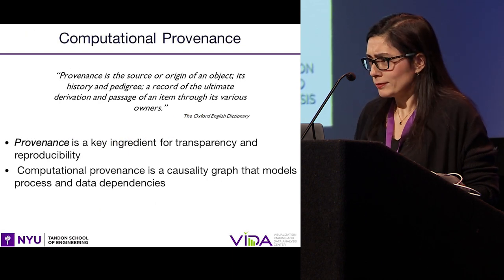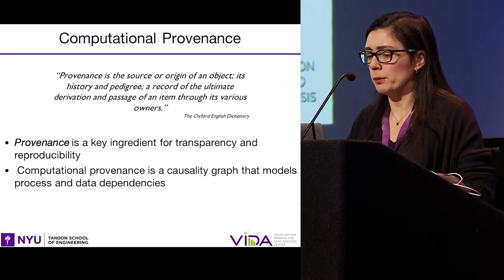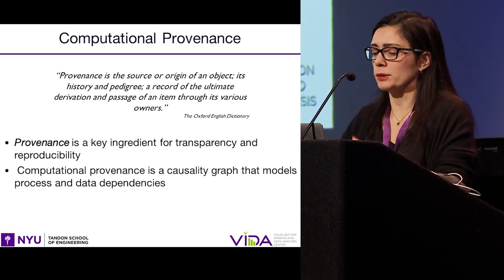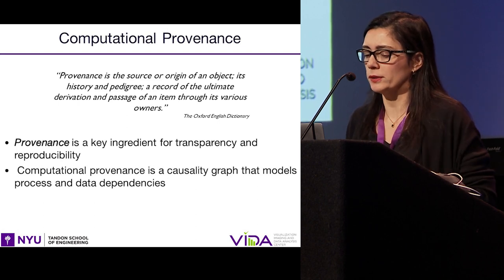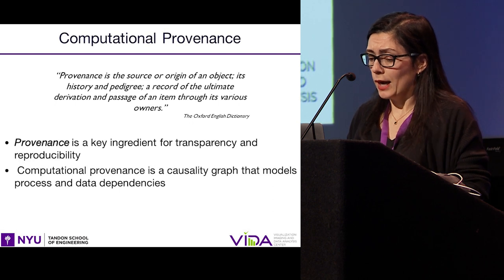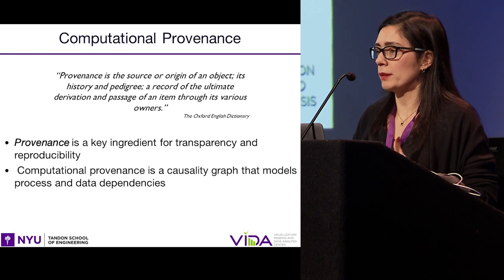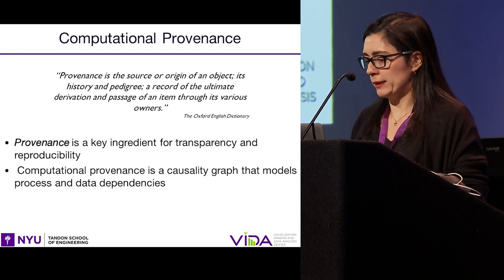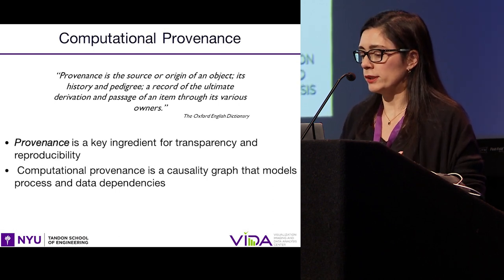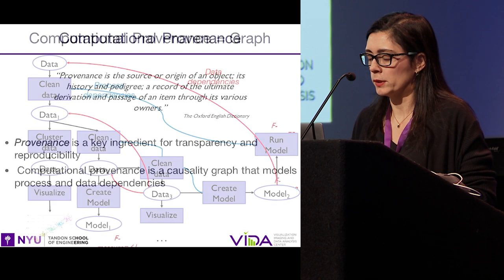So what is provenance? This is a term that is widely used in art and archaeology. It's the source of origin of an object, it's the history of pedigree, and a record of the ultimate derivation of an item through various owners. When you move to computations, computational provenance can actually be thought of as a causality graph that models all the processes and data dependencies. And these are actually key ingredients for one to obtain transparency and reproducibility of your computational results.